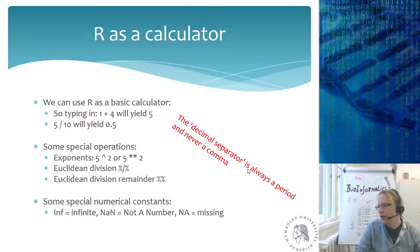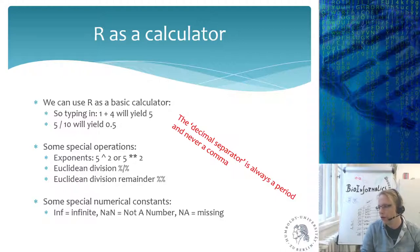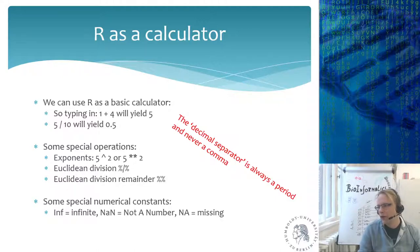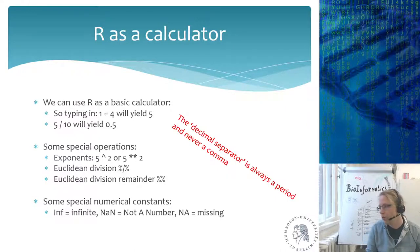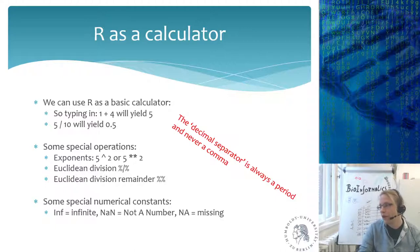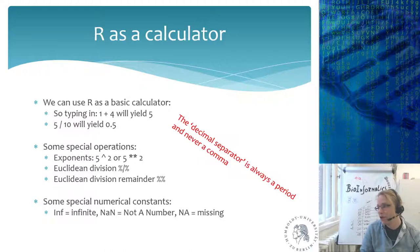Remember that the decimal separator in R is always the period, never the comma. In the American system, the comma separates thousands and the dot separates decimals. In Germany it's reversed — dot for thousands and comma for decimals. In R it's always a dot: 0.5 is half, but 0,5 is an error. If you receive an Excel file from someone using comma-based decimals, you'll need to recode it.